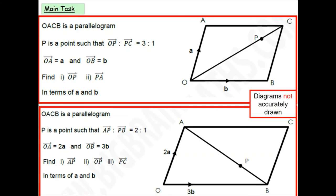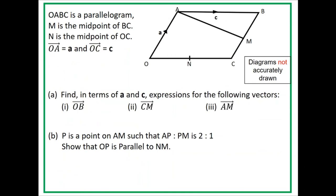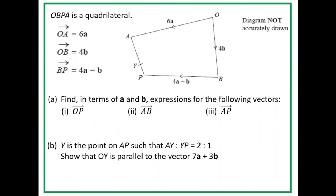For the main task of this lesson, complete one question from the red, making sure you answer all the parts. Then answer one of the two green questions. That's one question from the red and one from the green, completing all parts. Once you've finished, upload a photo of your work onto Class Charts to record your completion of this lesson.